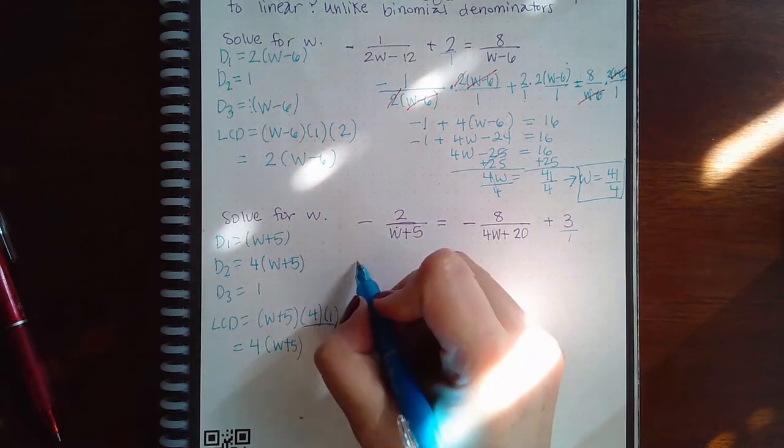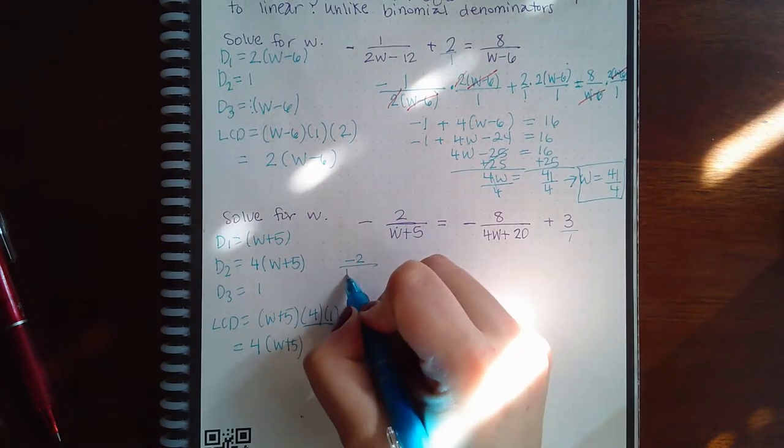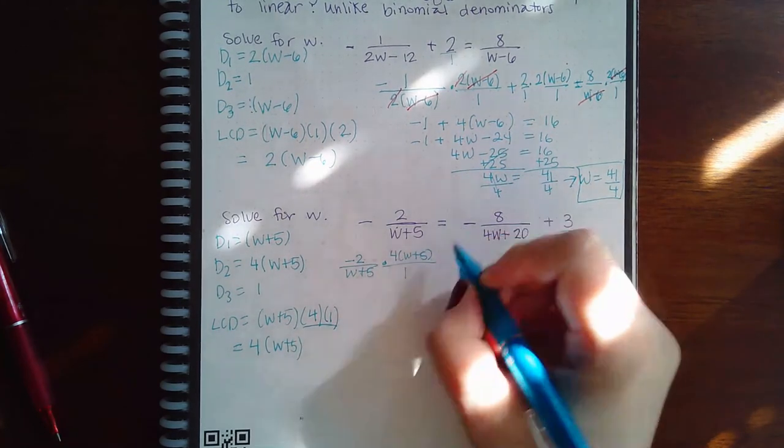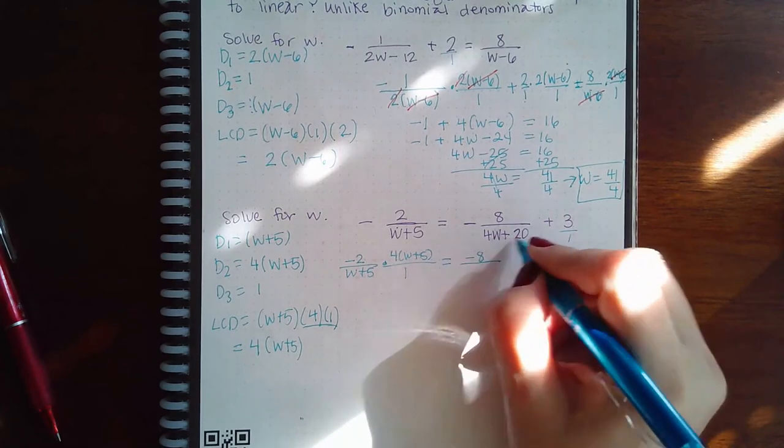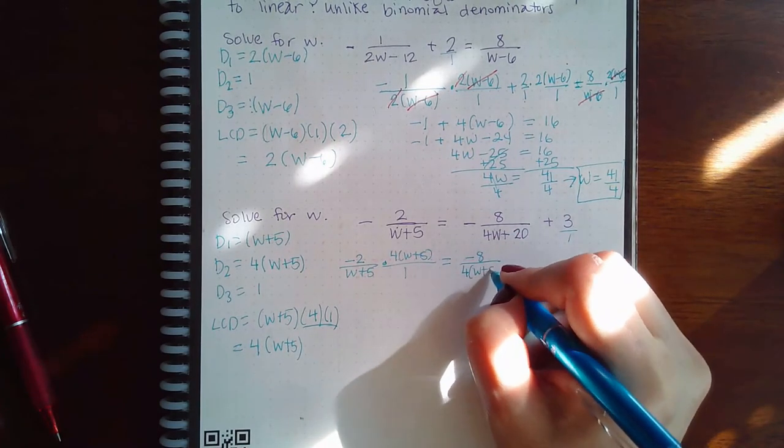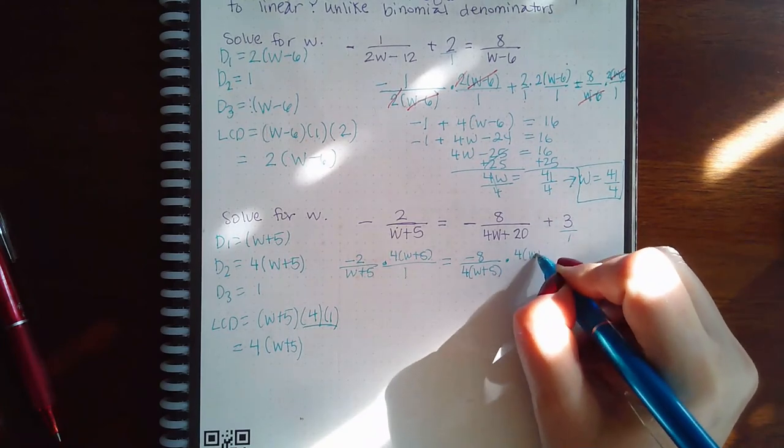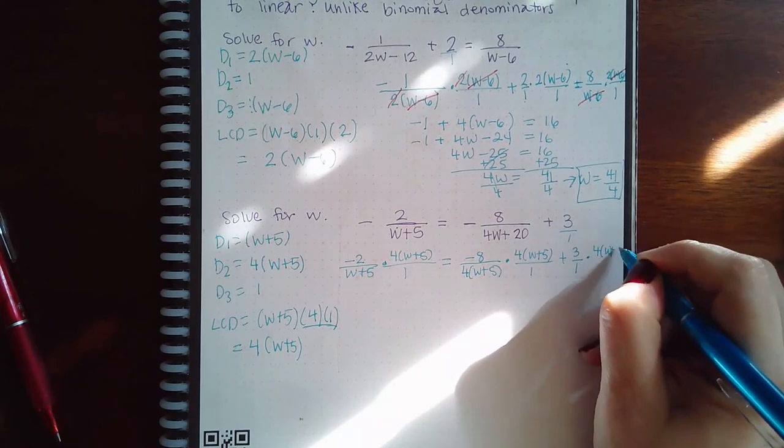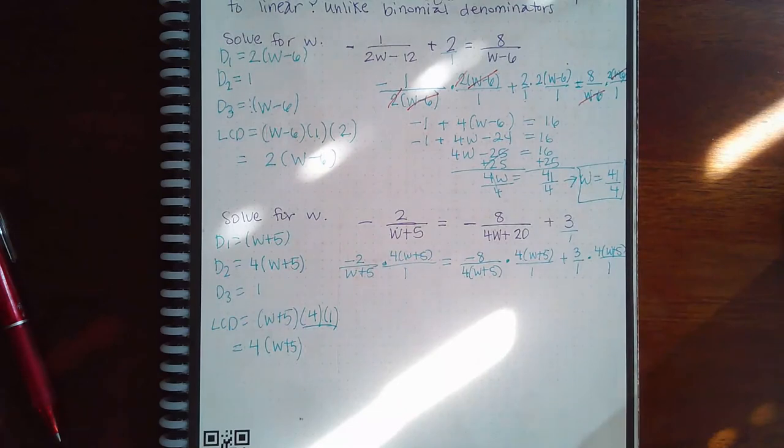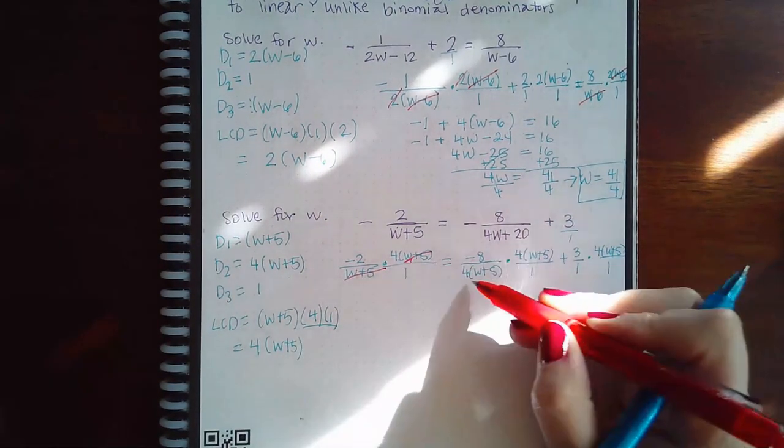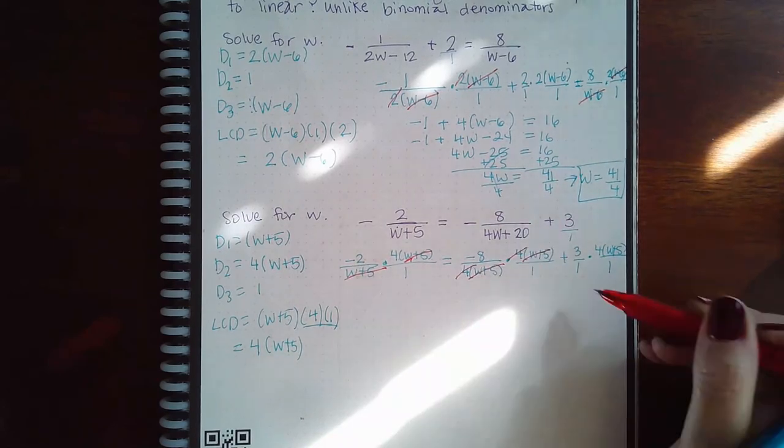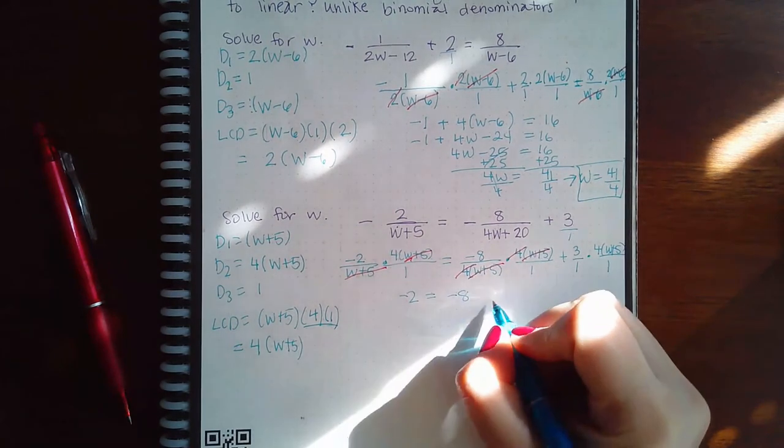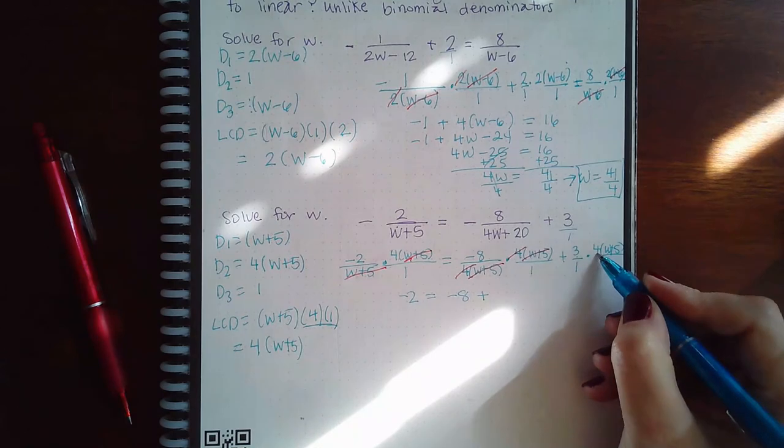So then that is going to get multiplied to every fraction. So negative 2 over W plus 5 times 4 W plus 5 over 1 equal to negative 8. Use the factored version, 4 times W plus 5 times the LCD over 1 plus 3 over 1 times the LCD over 1. So then here the W plus 5s cancel. Here the W plus 5s and the 4s cancel. And here nothing cancels.